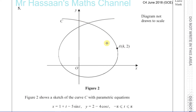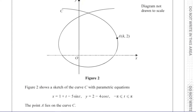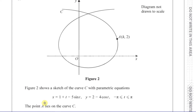This is the type of graph you get with parametric equations. You have x equals one plus t minus five sine t, and y equals two minus four cosine t, where t is between minus pi and pi.